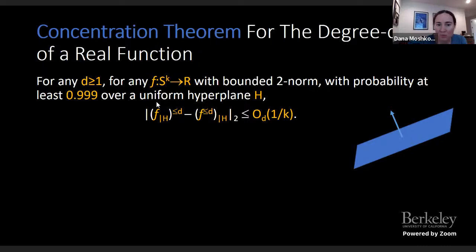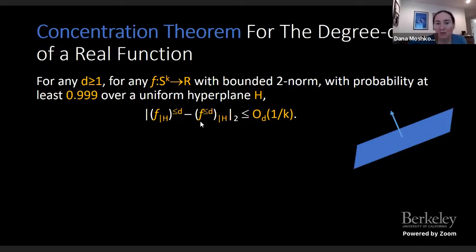What we prove is that the local low-degree part of the function — restricted to the hyperplane — is actually very close to the global low-degree part of the function. The global low-degree part, restricted to the hyperplane, and the local low-degree part restricted to that hyperplane are extremely similar — up to 1/K (one over the dimension).